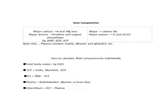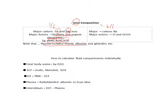Now let's look at ionic composition. There are two compartments: intracellular and extracellular. The major cations in the intracellular compartment are potassium and magnesium — cells are the banks of potassium and magnesium. The major anions are proteins, organic acids, and phosphates like AMP, ADP, and ATP. Note that plasma contains mainly albumin and globulin. In the extracellular compartment, the major cation is sodium, and the major anions are chloride and bicarbonate.